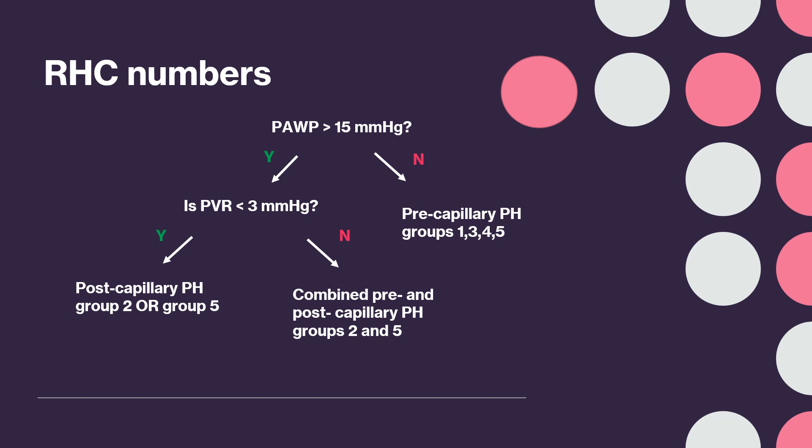If the PAWP is greater than 15, start thinking about group 2 (heart) or group 5 (multifactorial). If the pulmonary arterial wedge pressure is less than 15, then start thinking about group 1 (arterial), group 3 (lung), group 4 (CTEPH), and group 5 (multifactorial).